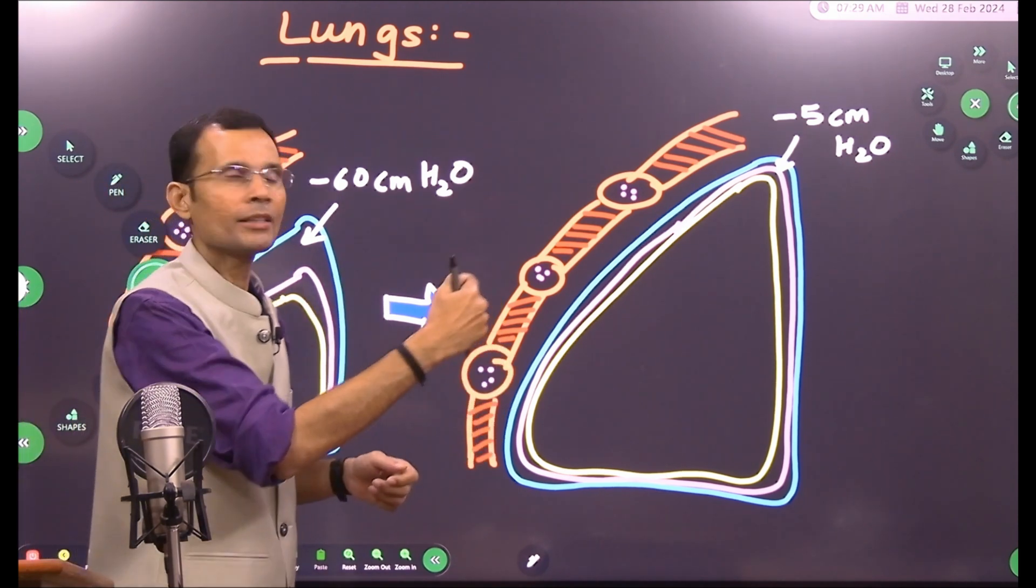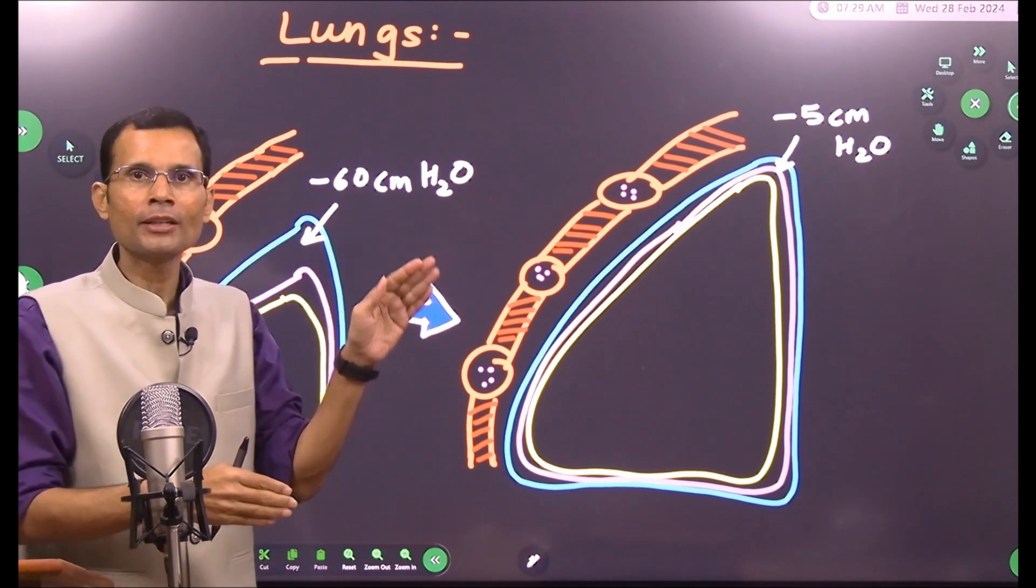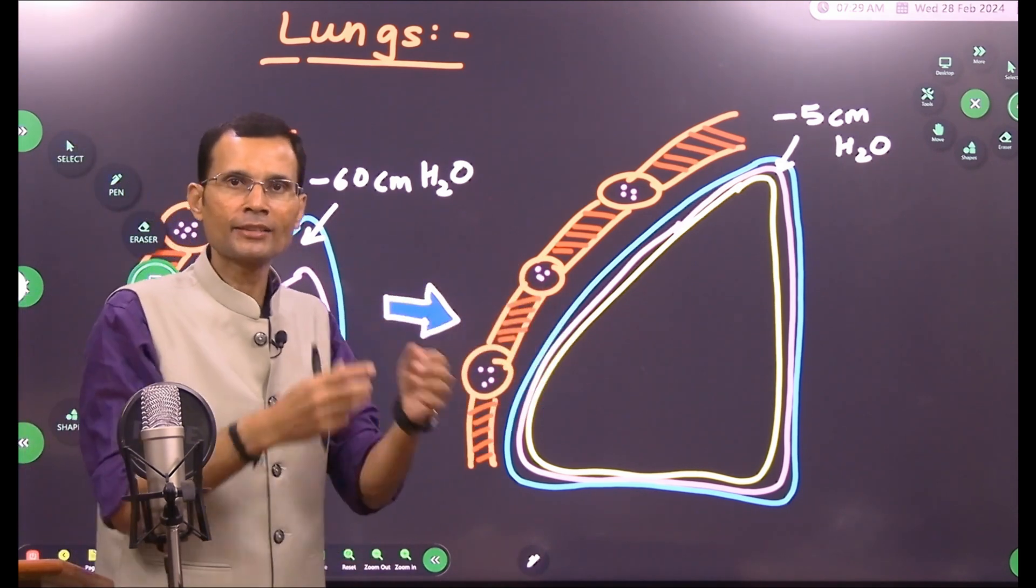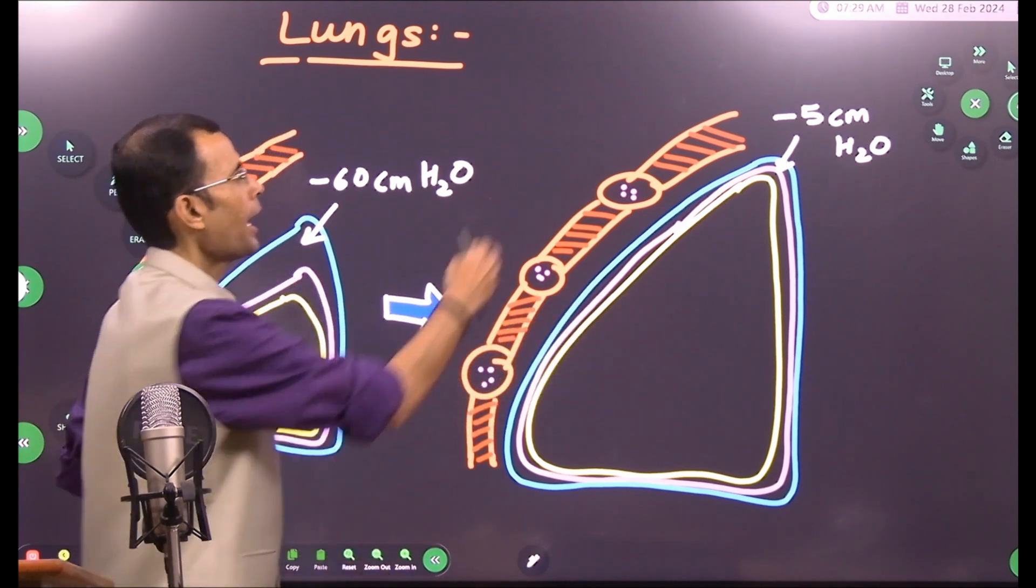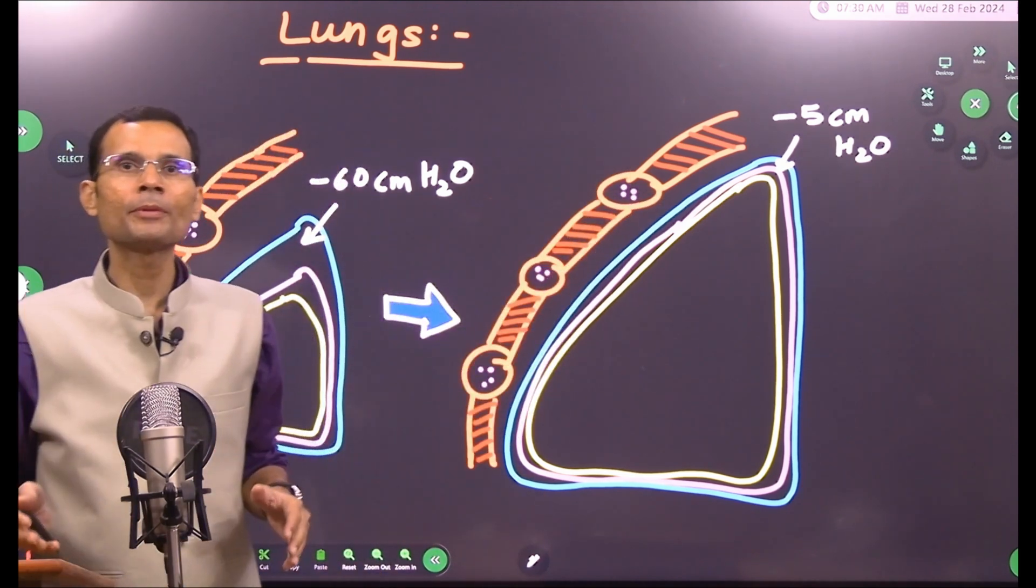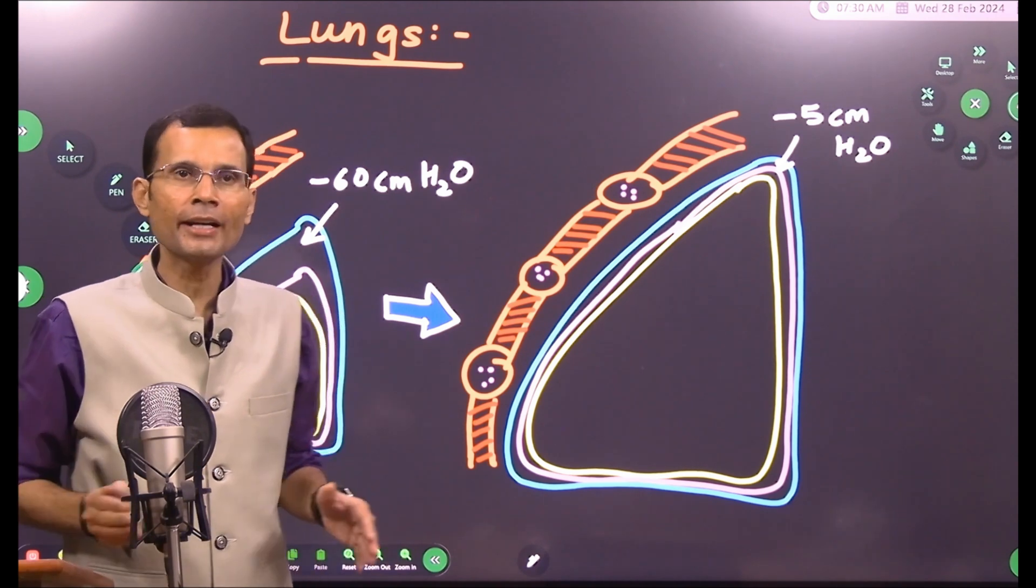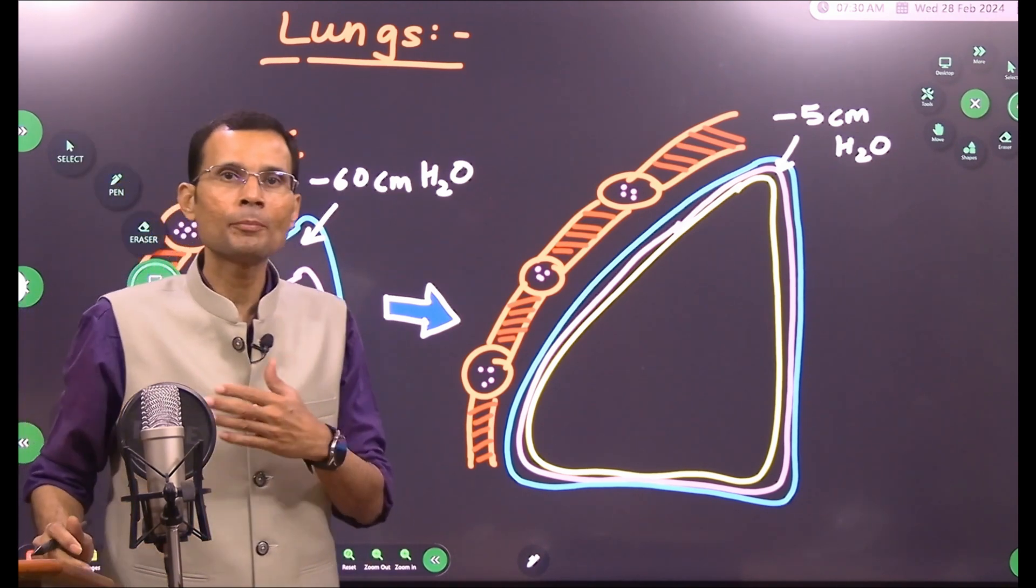Second breath will start, third breath, and the negative pressure will now decrease slowly as the lungs are expanding and expanding. Eventually, the lungs will be completely expanded to their normal state, and the baby will breathe normally thereafter.